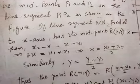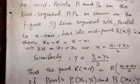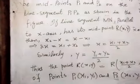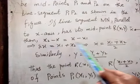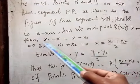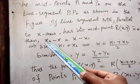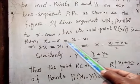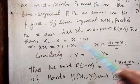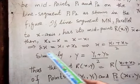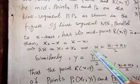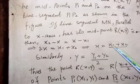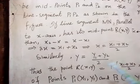Similarly, we can find or derive the y-coordinate of point R. We write y2 minus y equals y minus y1. And we get 2y equal to y1 plus y2, so y equals y1 plus y2 by 2.